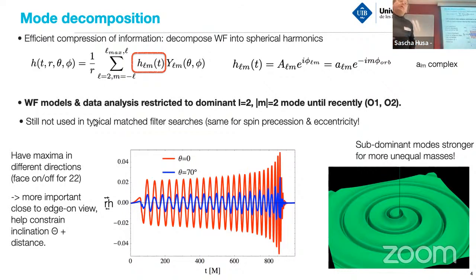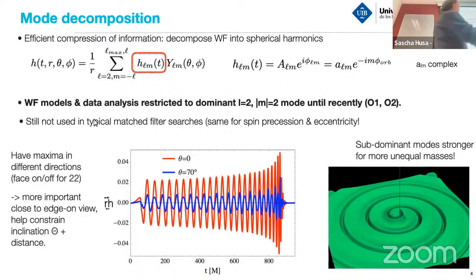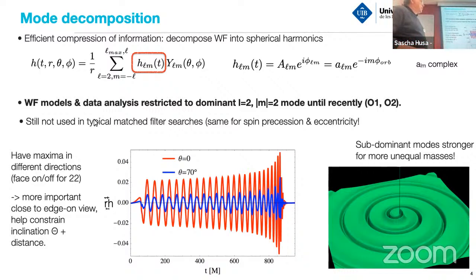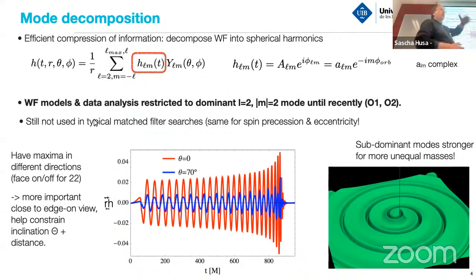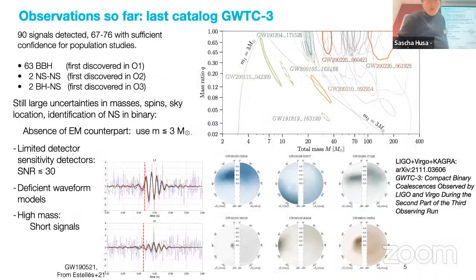Because the higher harmonics have a different dependence on inclination, this helps determine what the inclination is, breaking the degeneracy between inclination and distance — which is astrophysically very important because we really want to know how far these objects are. This plot of the gravitational wave signal for a relatively high mass ratio of ~20 shows the orbital plane, where the non-sinusoidal oscillations arise precisely because of these subdominant harmonics.